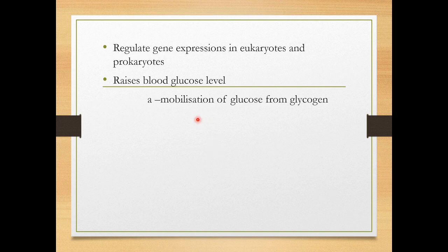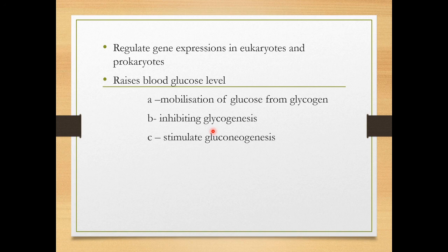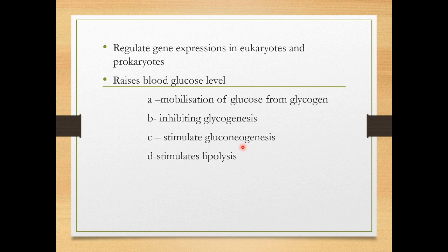Cyclic AMP regulates blood glucose levels through several methods. First is mobilization of glucose from glycogen — glycogen stored in the muscles and liver is mobilized into the bloodstream. Second is inhibiting glycogenesis — the synthesis of glycogen from glucose — so there will be plenty of free glucose. Third is stimulating gluconeogenesis — the synthesis of glucose from non-carbohydrate sources like proteins and lipids.